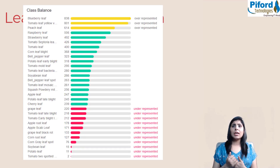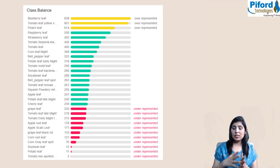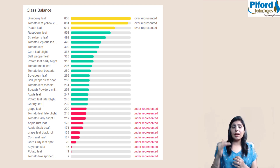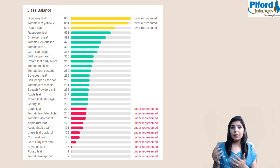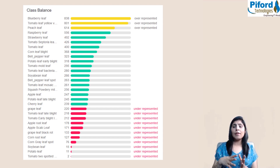Let me show you the number of images in each class. You can see the names of all the classes and their image counts. Blueberry leaf, tomato leaf yellow, and peach leaf are the over-represented classes — they have the maximum number of images. The red bars show the under-represented classes: grape leaf, tomato leaf late blight, tomato early blight, apple rust leaf, apple scab, and others. Our dataset is not balanced.